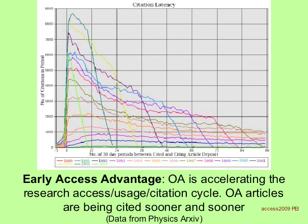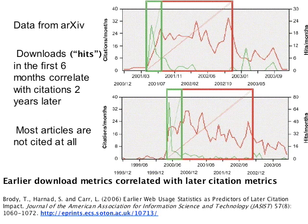These data are from the physics archive. This graph shows that higher early download counts are predictive of higher later citations. So if in the first six months an article tends to be downloaded more, then it's likely that in a year and a half or two years it will be cited more as well. This is especially useful for comparing and evaluating work in its early stages, when it hasn't yet had a chance to get many citations — you may already get differences at the level of downloads. This is also useful for evaluating junior faculty that haven't yet had a chance to get many citations but may already have downloads.